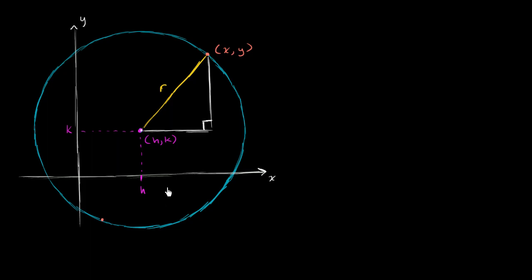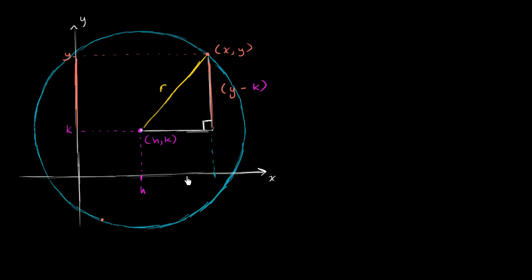What's this height going to be? Well, we know this point right over here has a y-coordinate of k, and this point over here has a y-coordinate of y. So this distance is going to be y minus k. And what's this horizontal distance? Well, this is h, and this point on the x-axis we can just call x. So this distance is going to be x minus h.